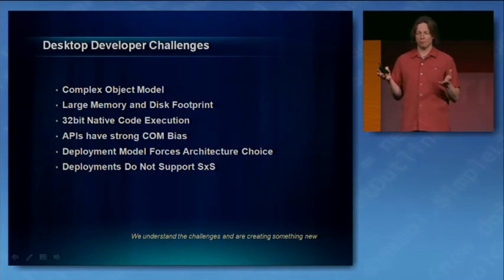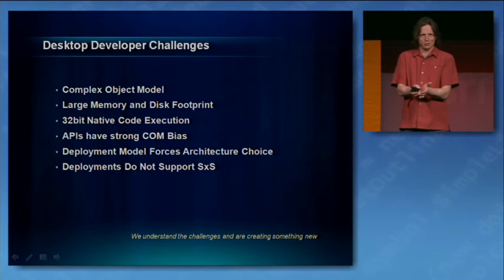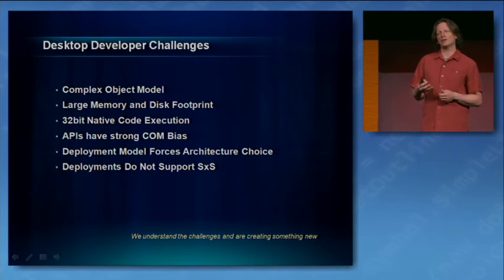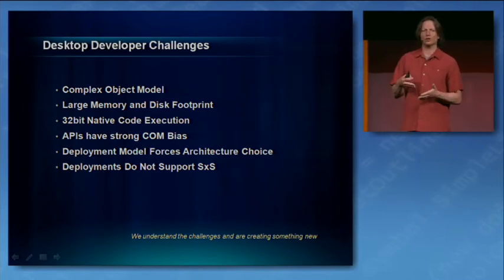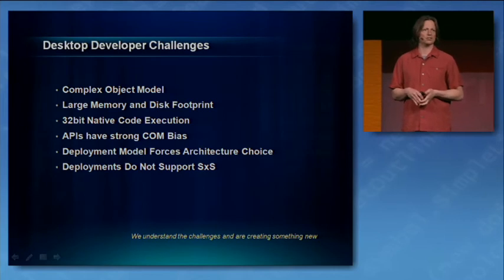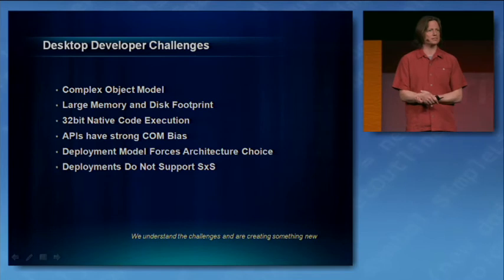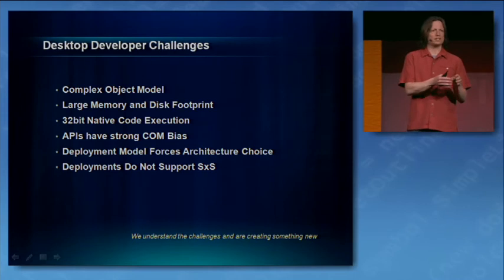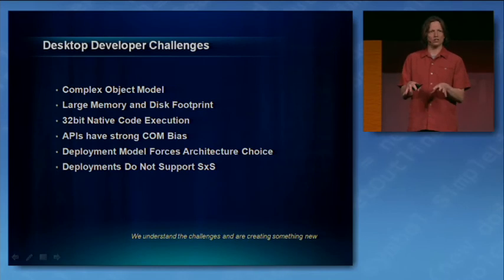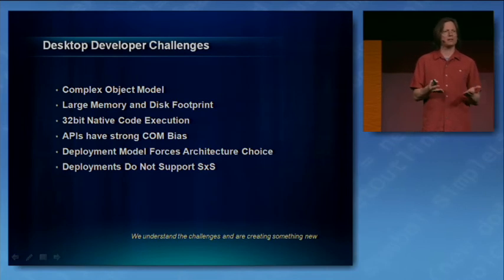With the large object model comes a large amount of disk space required to install it, and also large memory requirements just to run it. And something we've been hearing increasingly more is that you want native 64-bit code execution. More and more, the machines on your deployments are 64-bit, and you can't exploit the full power of the platform if you're running a native 32-bit application. Our APIs for .NET, Java, and C++ are really based on our COM internal architecture — they have a very strong COM bias — and that's becoming more of an impediment for you moving forward.